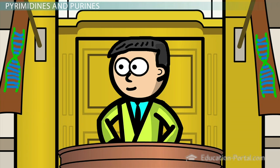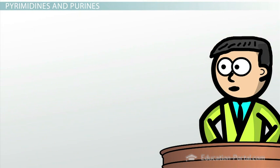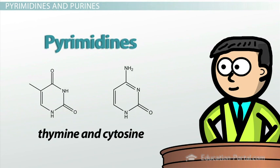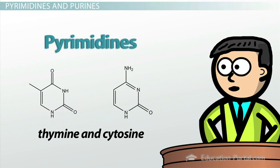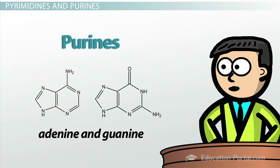Yes, you're quite right. The bases can be categorized into two different groups. The single-ring nitrogenous bases, thymine and cytosine, are called pyrimidines. And the double-ring bases, adenine and guanine, are called purines.